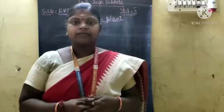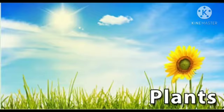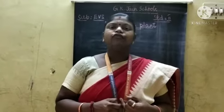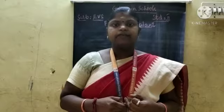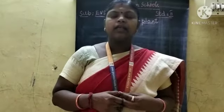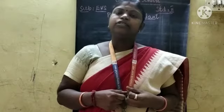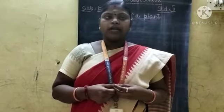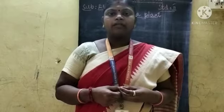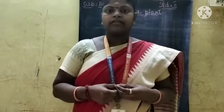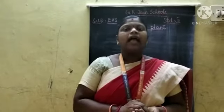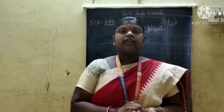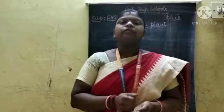Shall we move on to the topic, children? Plants are very useful to us. Plants give food, fruits, vegetables and flowers. Plants need water and sunlight to grow. They make their own food with the help of sunlight. Just as we have body parts, plants also have some parts. Our body has different parts like head, hands and legs. In that way, plants also have some different parts.